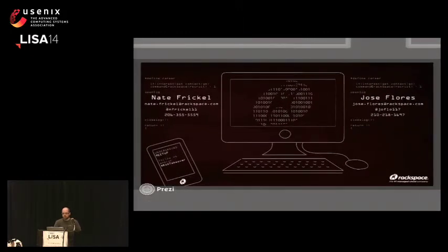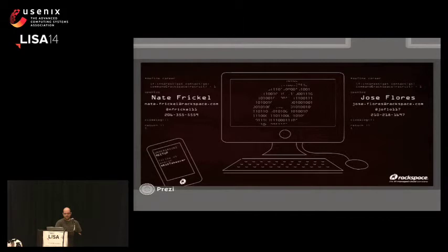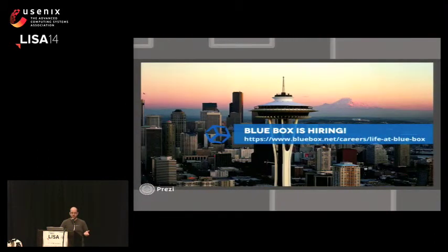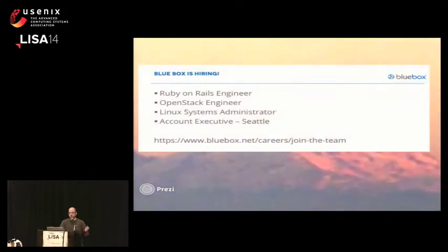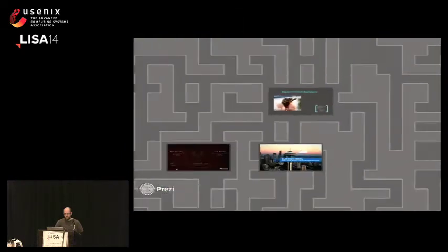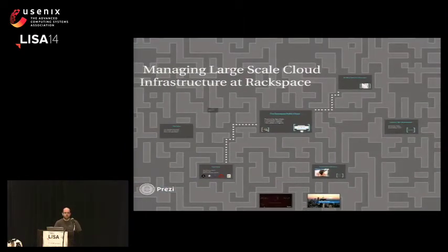There's an opening at Rackspace — if you're interested, here are a couple of contacts. Come find me after if you can't read this and I'll get you that information. If you like working at very large scale, Rackspace is a really awesome place for that. Blue Box is also hiring — if you happen to like Seattle or other places, there's a URL. We're specifically hiring for Ruby on Rails, OpenStack Engineering, Linux System Administration, and Account Executive. It's a fun place to work. With that, I want to open it up to questions and discussion.